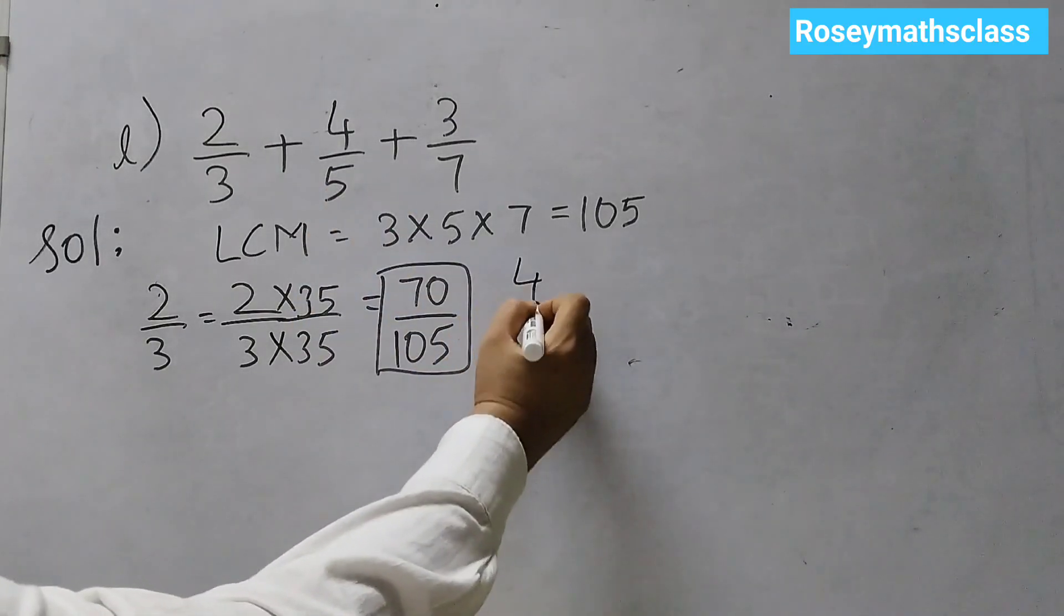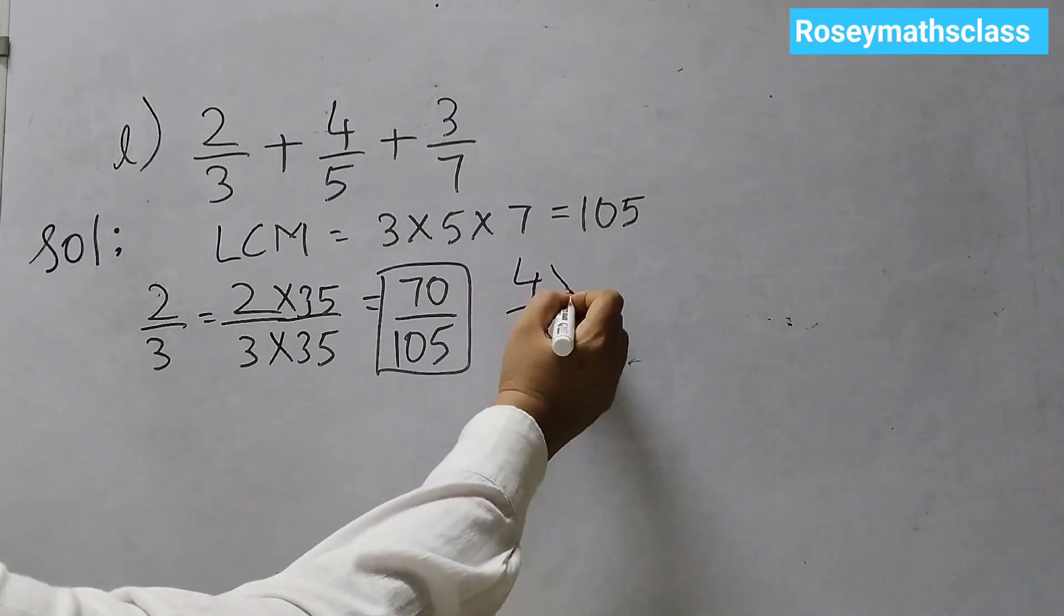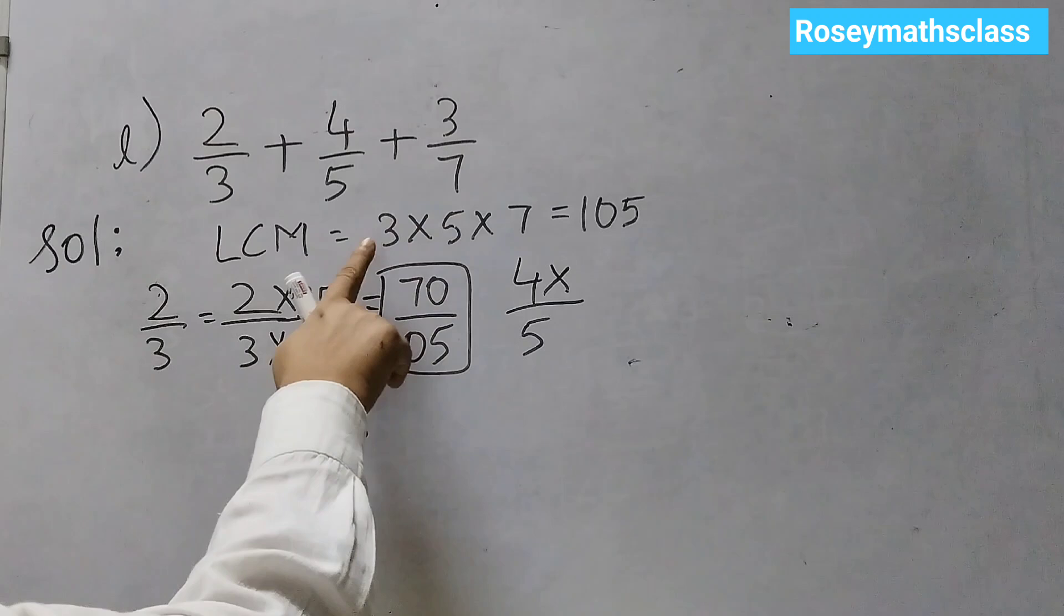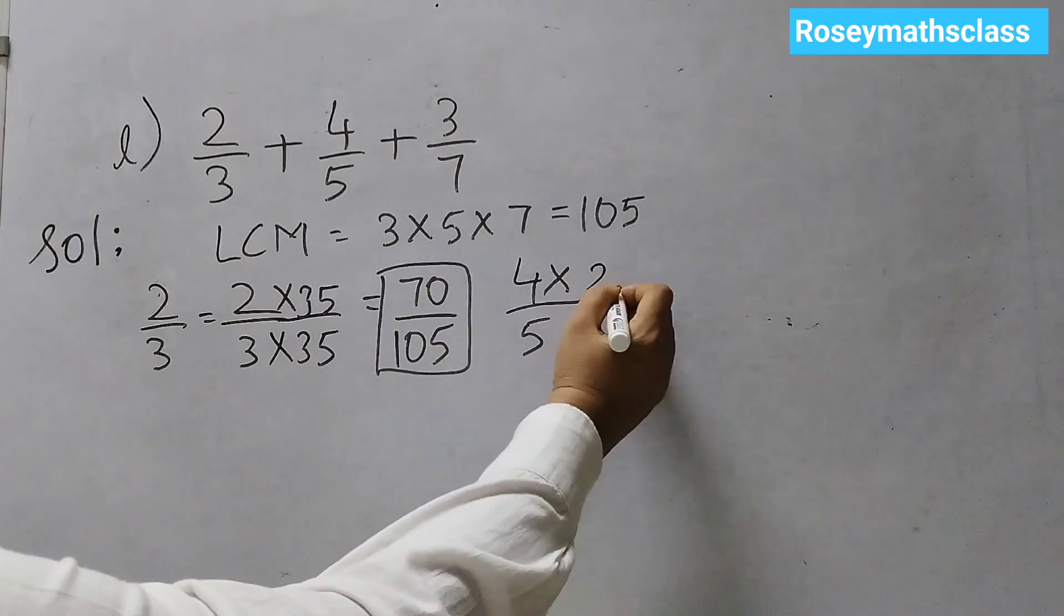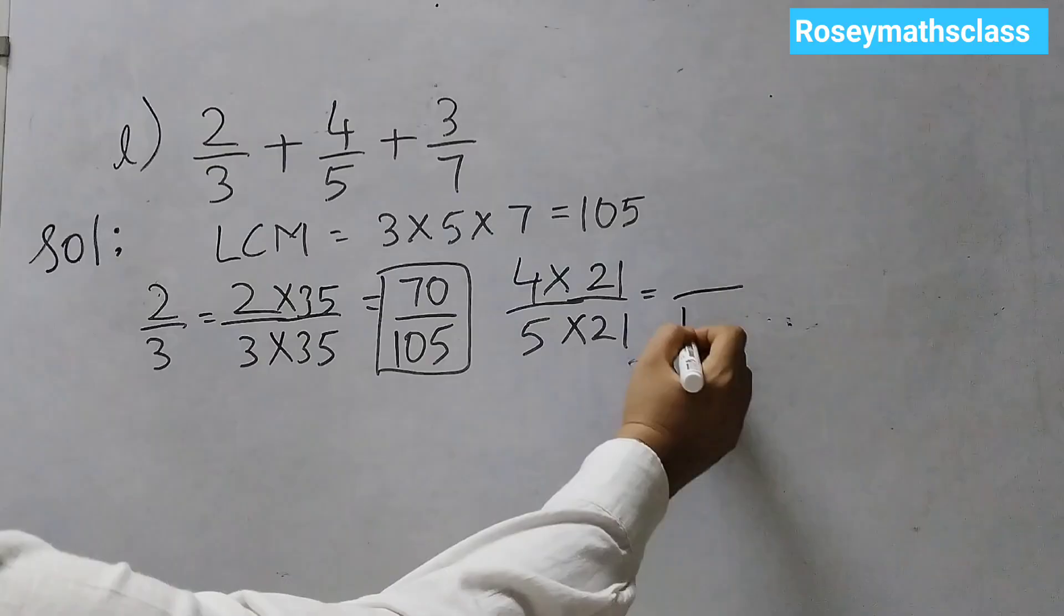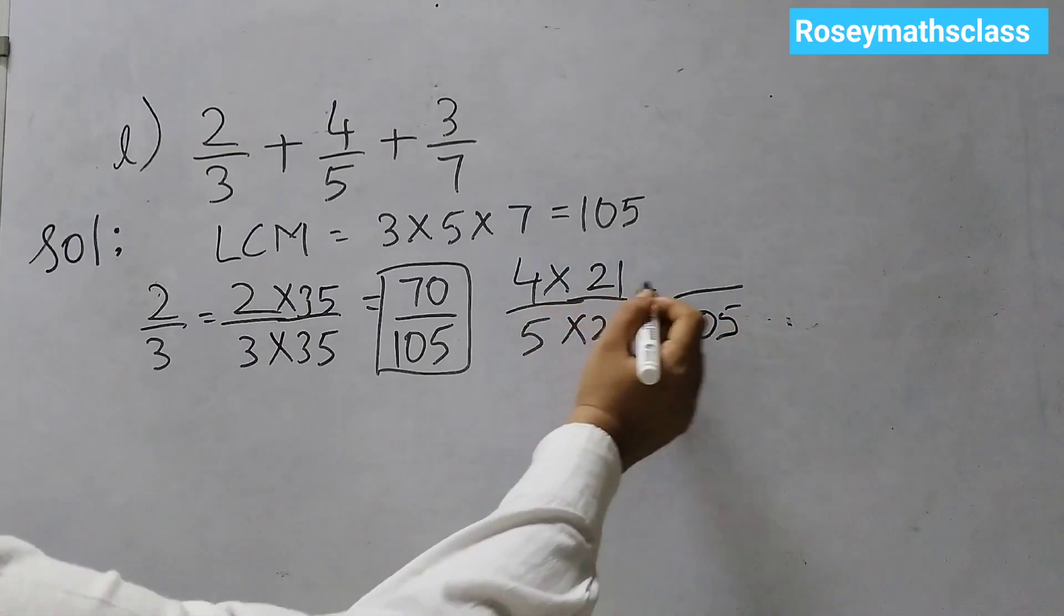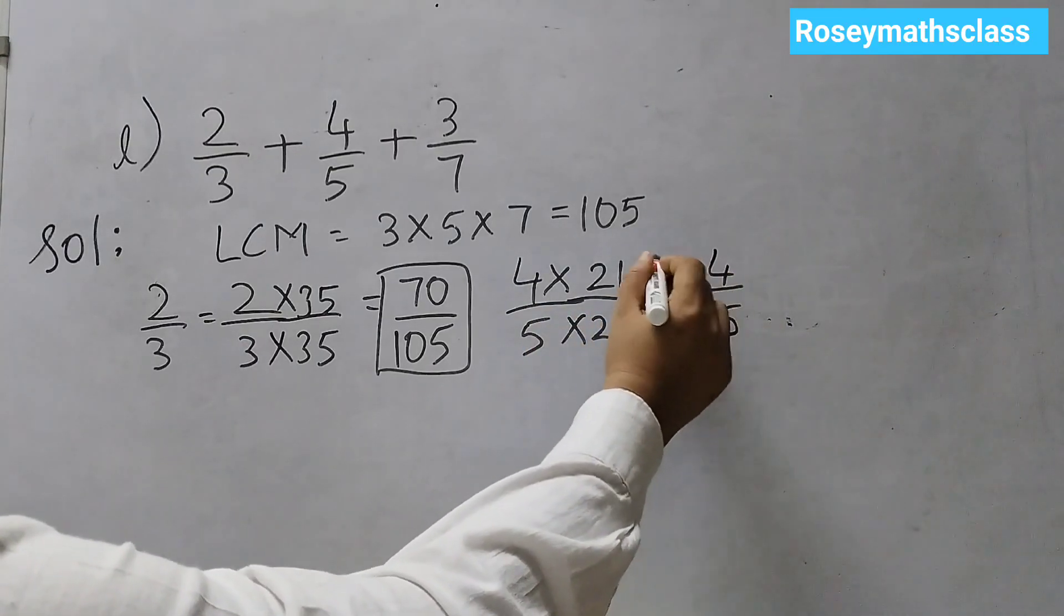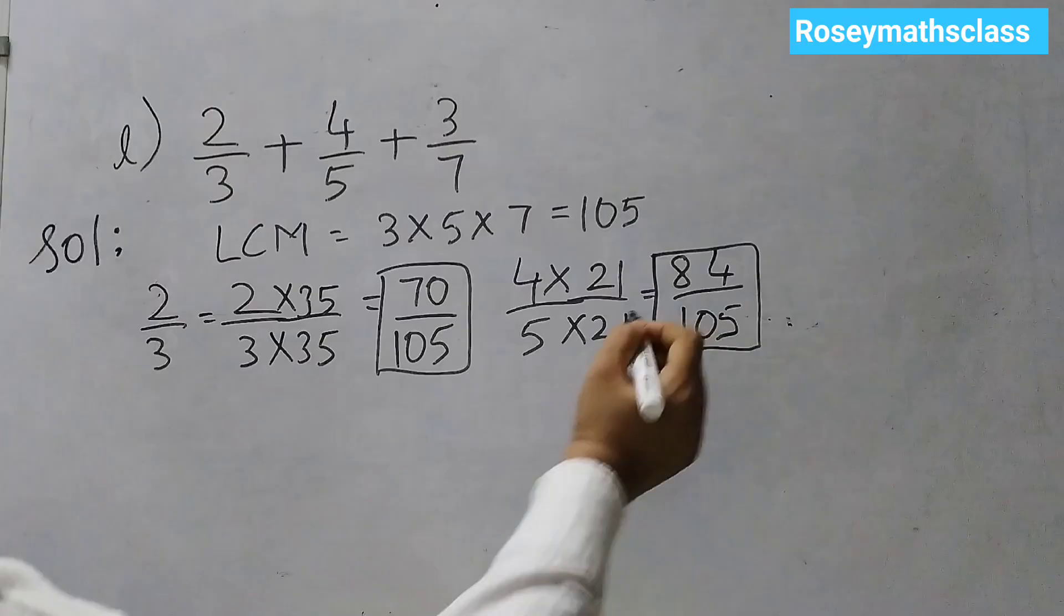Second one is 4 by 5. So, 4 by 5 we will multiply by, hide 5, 3 into 7 is 21. So, 21 into 21. The denominator is 105. 4 times 21 is 84. So, this is the second one.